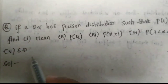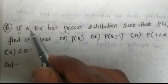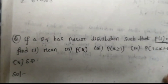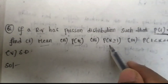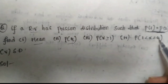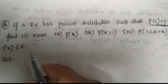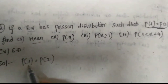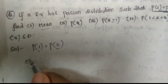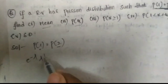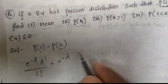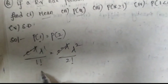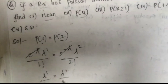Let us consider another example for understanding Poisson distribution. The question is: if a random variable has Poisson distribution such that P(1) = P(2), find the mean, P(4), P(X ≥ 1), P(1 < X < 4), and standard deviation. From the condition P(1) = P(2), substituting in the formula: e^(−λ) · λ^1 / 1! = e^(−λ) · λ^2 / 2!. The e^(−λ) cancels, giving λ = λ²/2.